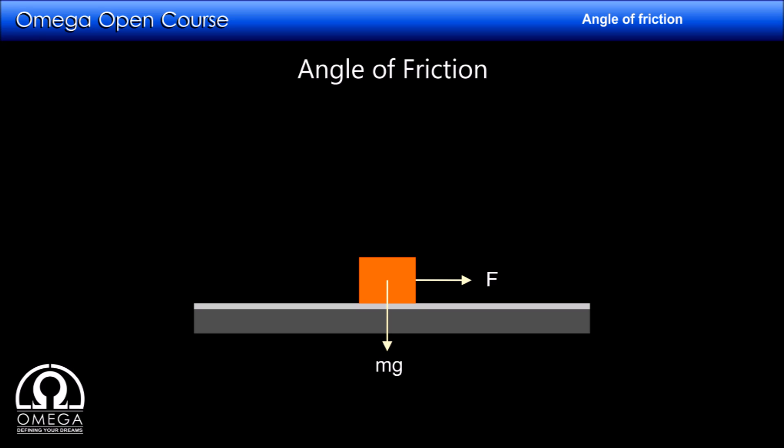Furthermore, let us assume that the block is not moving. The surface applies two forces on the block. The one perpendicular to the surface is what we call normal and another along the surface which we call friction. The resultant of these two forces is called contact force. The angle this force makes with the normal is called angle of friction.